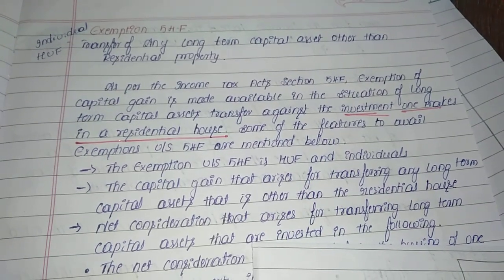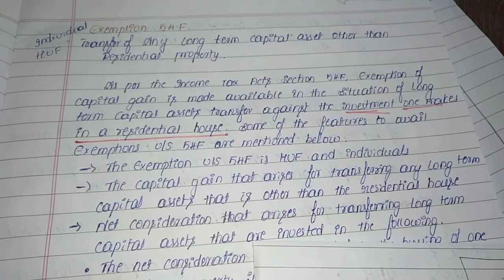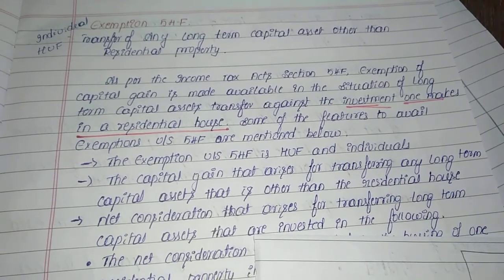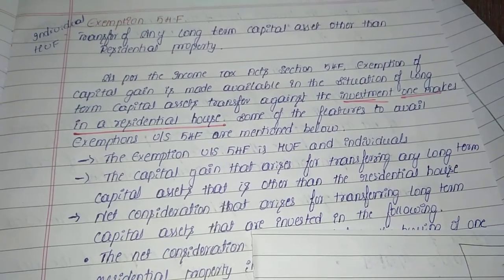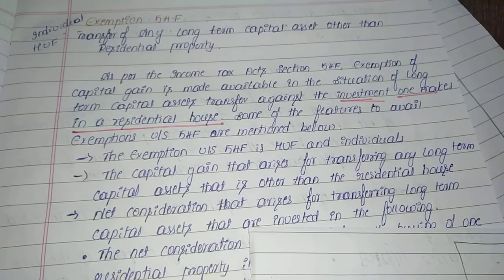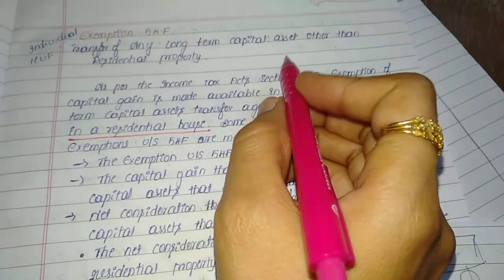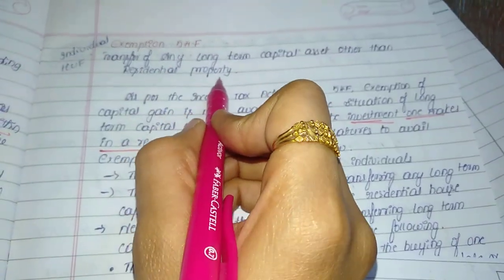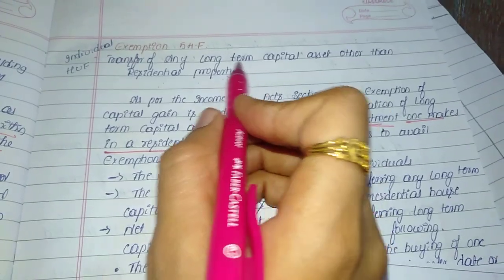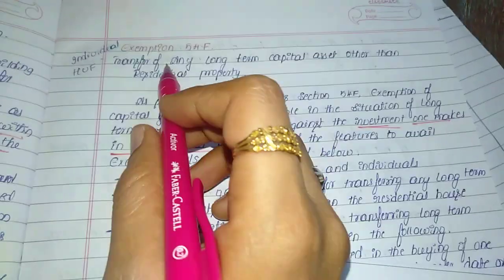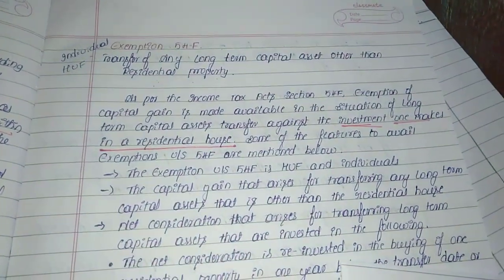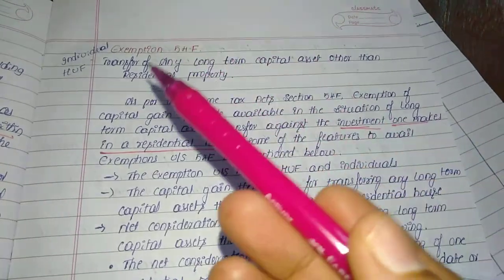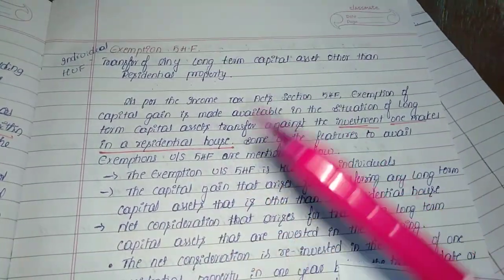The first condition is the transfer of any long-term capital assets, but other than residential property. Why they mention 'other than residential property' — because the residential property concept is already covered under section 54. So the remaining part — transfer of any long-term capital assets other than residential property — that income can be claimed as exemption under section 54F.